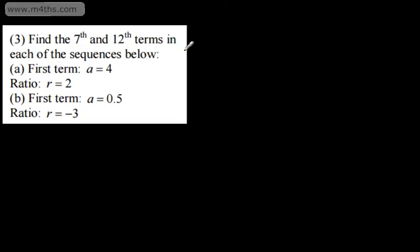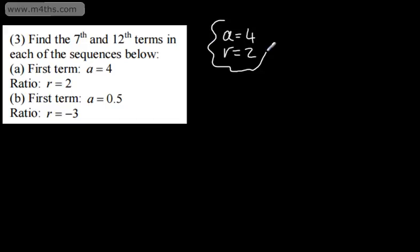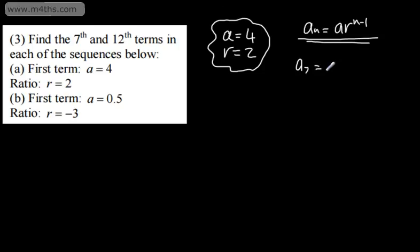In question 3, we're asked to find the 7th and 12th terms in each of the following sequences. In the first one, we've got a, that's the first term of 4, and r is 2. So a is 4 and r is 2. Just using the formula, we can say that a sub n is equal to a multiplied by r to the power of n minus 1. If we want the 7th term, a sub 7, that's going to be the first term, which is 4, multiplied by 2 to the power of 6. 2 to the power of 6 is going to give me 64, so this will be 256.